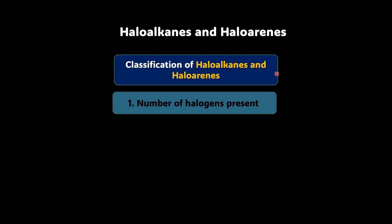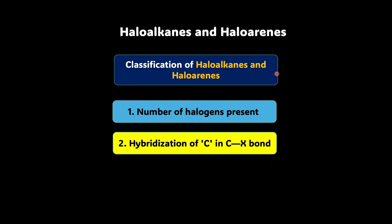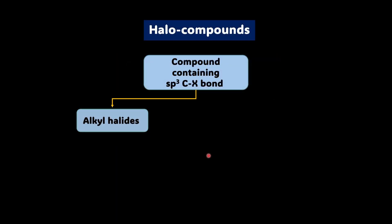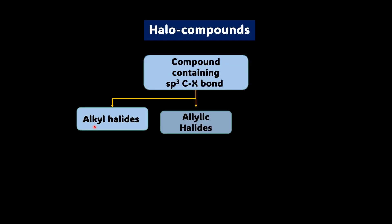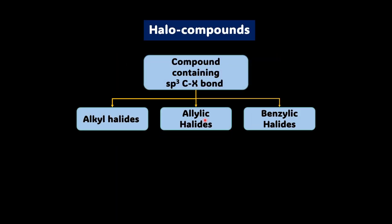Now we will move on to the next classification — the classification based on the hybridization of carbon in the carbon-halogen bond. First, we will talk about the carbon which is SP3 hybridized in this carbon-halogen bond. Under this, we can have alkyl halides, we can have allylic halides, and we can have benzylic halides.